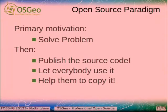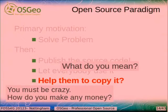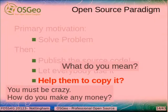Let's look at the open source paradigm. The primary motivation is to solve the problem, then publish the source code, let everybody use it, and help them copy it. Wait a second — why would I help somebody copy my software, which I've implemented, which is my ownership? How do you make money? These are all questions you get asked when you do open source software.